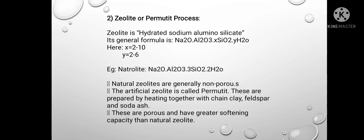Second, zeolite or permutit process. Zeolite is hydrated sodium aluminium silicate. Its general formula is Na₂O·Al₂O₃·xSiO₂·yH₂O, where x equals 2 to 10 and y equals 2 to 6. Natural zeolites are generally non-porous. The artificial zeolite is called permutit and is prepared by heating together china clay, feldspar, and soda ash. These are porous and have greater softening capacity than natural zeolite.